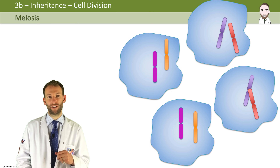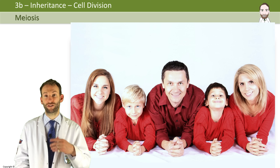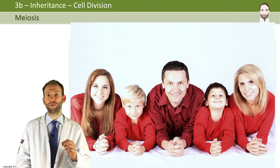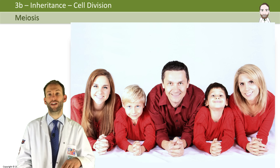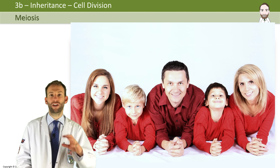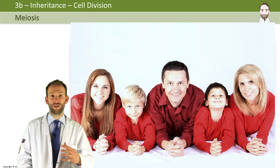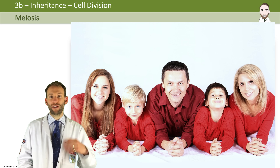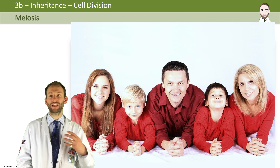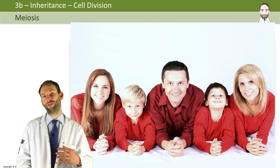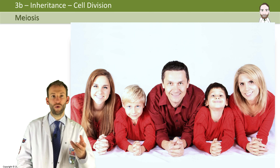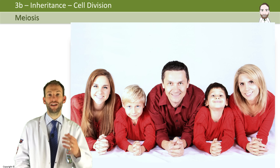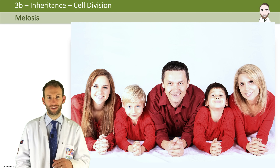The offspring from sexual reproduction vary genetically because each sperm and egg are genetically different, due to the mother's and father's chromosomes getting mixed up when cells are created by meiosis. This process is really important for creating variation between you and your brothers and sisters. Fertilization is also completely random — any sperm can fertilize any egg, and each sperm and egg is slightly different, so you end up being different from your siblings.